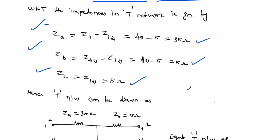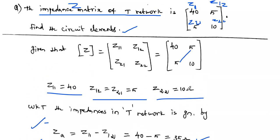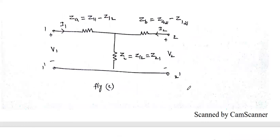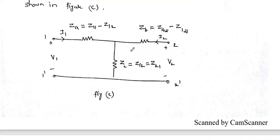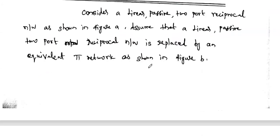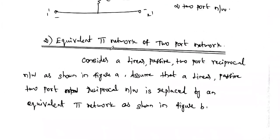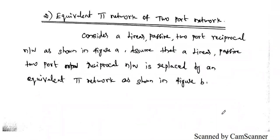In the previous video, we discussed the equivalent T network of the two-port network. A T network means three elements are connected in the shape of the capital T. If you want to implement the two-port network in T structure, you need the impedance parameters. Similarly, in order to draw the equivalent pi network of a two-port network, you should know the admittance parameter — that is, the Y-parameter. If you know it, we can easily construct the pi network elements of the two-port network.